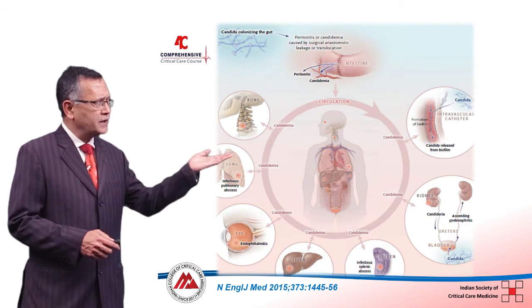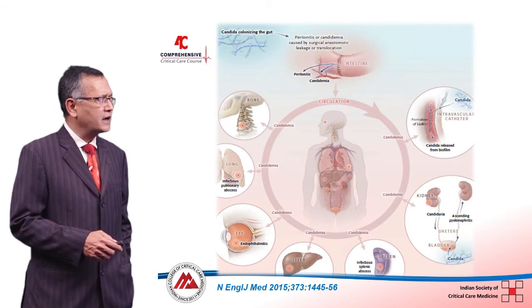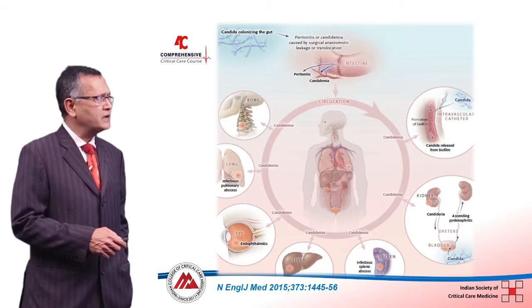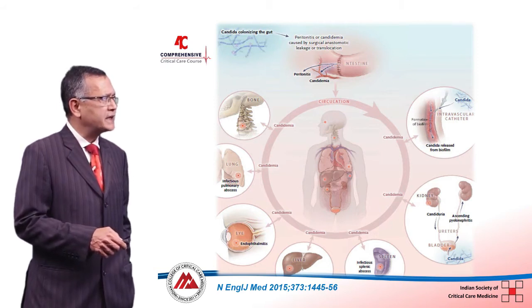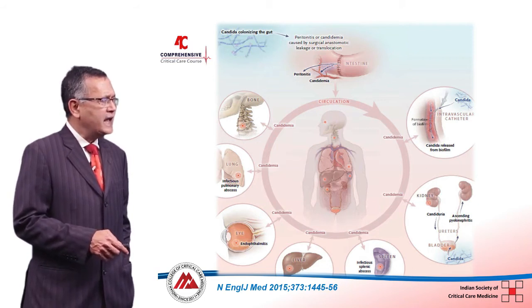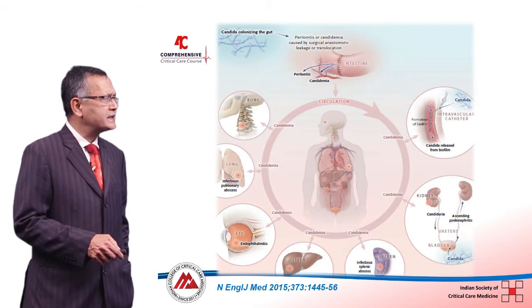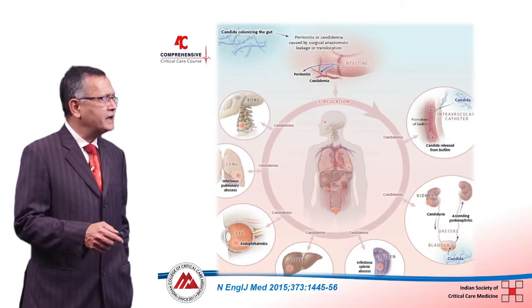This is a paper published two years back in the New England Journal of Medicine. It clearly summarizes how this infection enters the blood — either from the intestine after colonization, especially with cytotoxic chemotherapy, or from an intravascular catheter. From the bloodstream, it can spread to any organ: bone, lung, eye, brain, liver, spleen, and even the kidney.